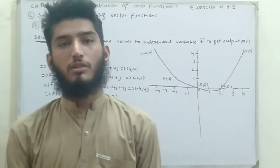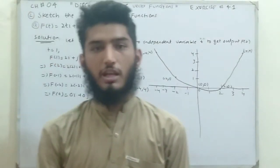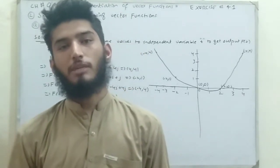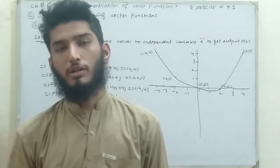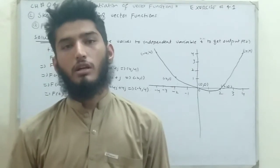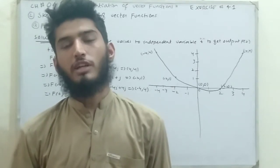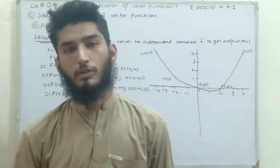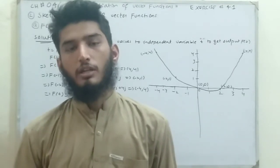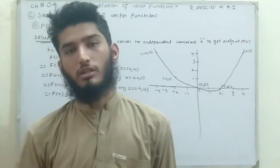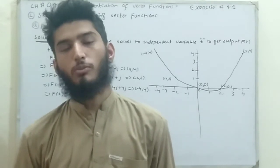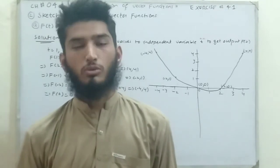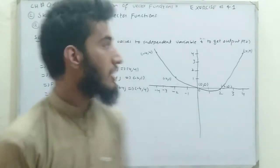Bismillahirrahmanirrahim. Welcome to my YouTube channel, Calculus and Mathematics Learning. In the previous video we started Chapter 4, Differentiation of a Vector, related with FSc Part 2 Mathematics. In Chapter 4 we started with Exercise 4.1, Question 1, which was totally related with the domain of vector functions. In today's video I am going to start the next question related with the same Exercise 4.1, on the graph of vector functions. There are two parts in this question, so let's move toward the question.